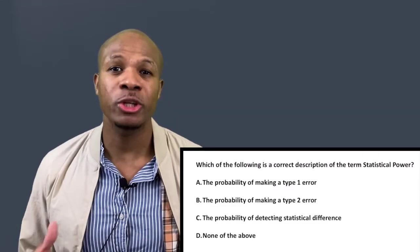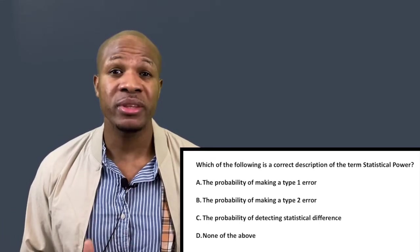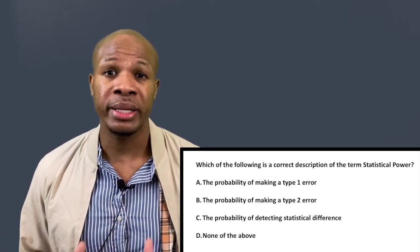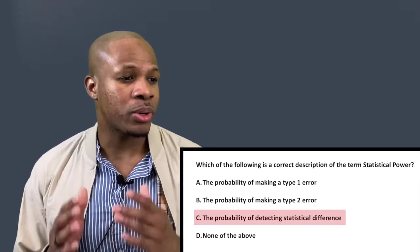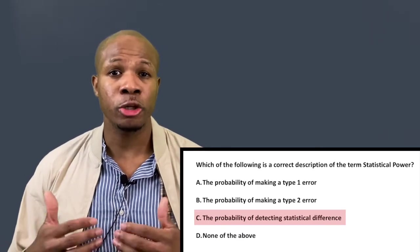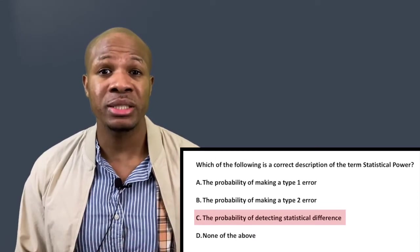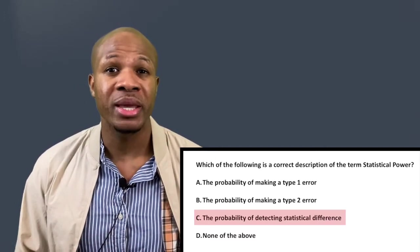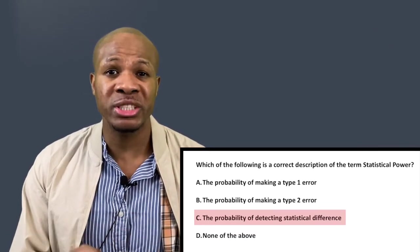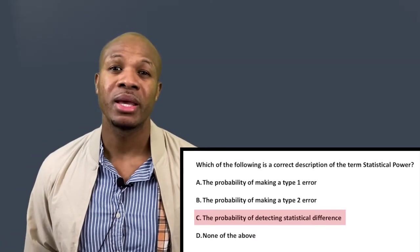Question number three: Which of the following is a correct description of the term 'statistical power'? You should know this definition. Answer choice C is correct — statistical power is the probability of detecting a statistical difference. If a study meets power, it is likely to show statistical difference in the results. Think of statistical power like a microscope: good statistical power means a very powerful microscope that can see tiny differences, whereas an underpowered study has a blurred view and may miss real differences.